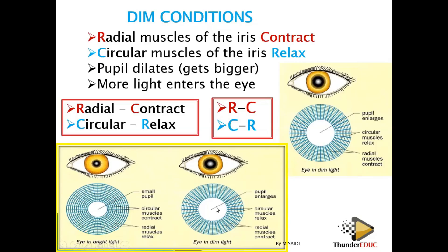So basically, that's what you need to know about dim and bright light. During dim light, more light enters the eye, while during bright light, less light enters the eye.